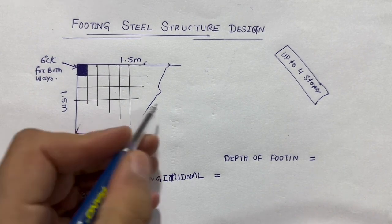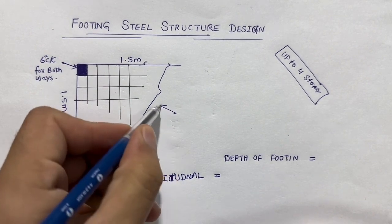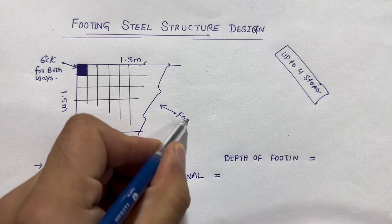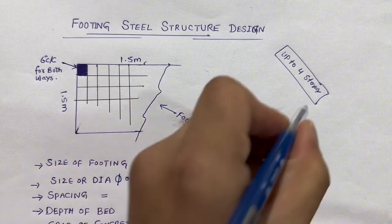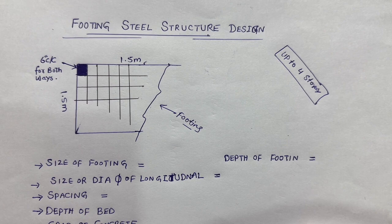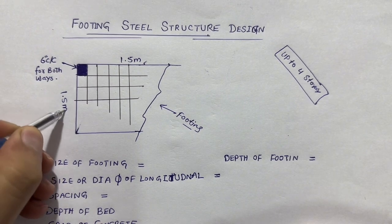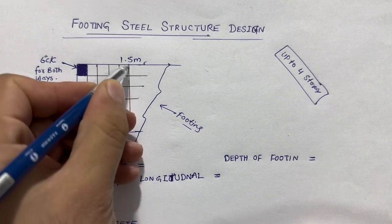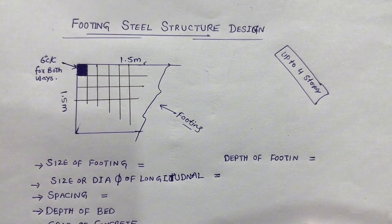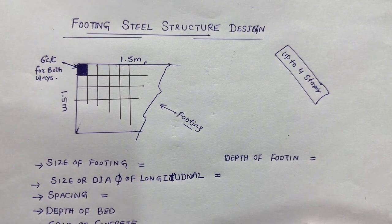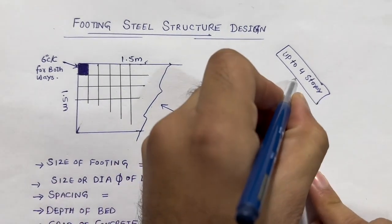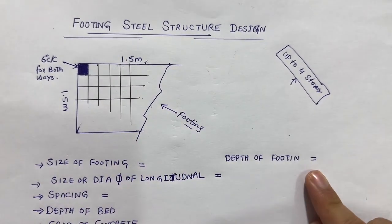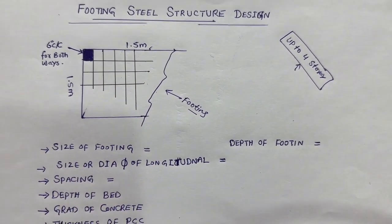If you see guys, this is a footing. The size of footing for up to 4 storey residential building — not for commercial building — should not be less than 1.5 meter by 1.5 meter. You can say this is about 5 feet by 5 feet for a normal residential building up to 4 storey. This is a very important point to know.